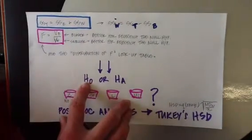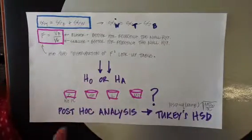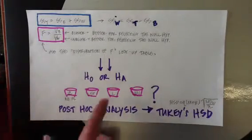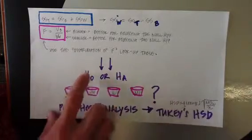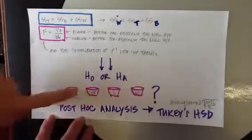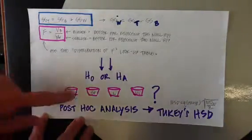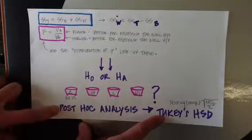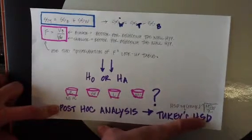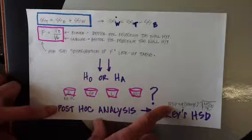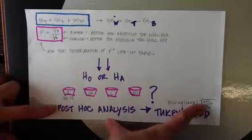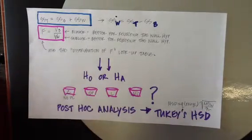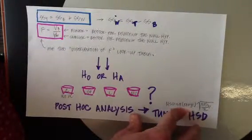But that's all ANOVA tells you — whether you can support your null or alternate hypothesis. You have to do a separate post-hoc analysis to determine which of the samples are really statistically different from each other. There are a number of different post-hoc analyses you can do. Tukey's HSD, which stands for Honestly Significantly Different — that name totally cracks me up — is probably the most common. The formula is: HSD equals the Q range times the mean squares within divided by N, the sample size. SPSS will calculate this for you, but the Q range comes from a lookup table, so that's important to note.